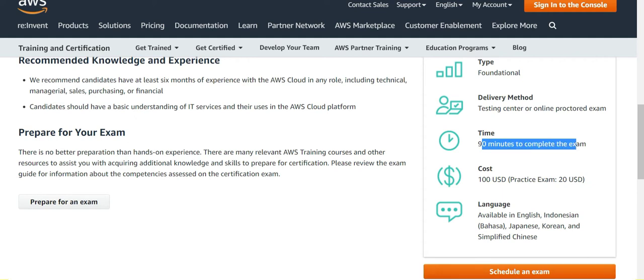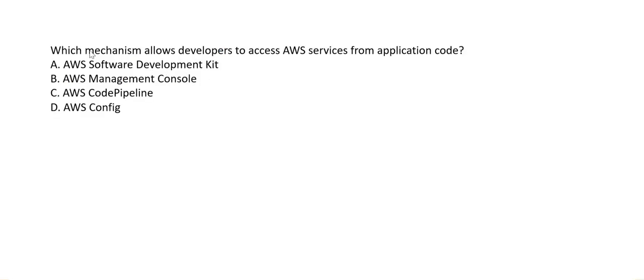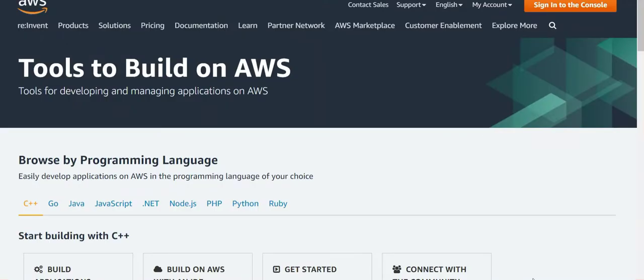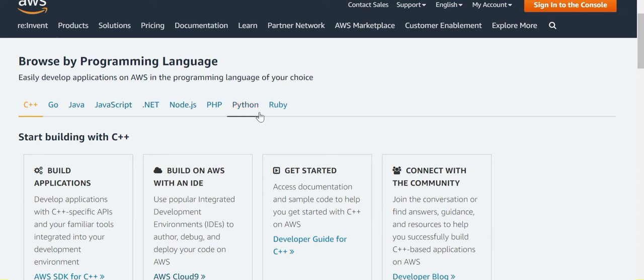The first question: which mechanism allows developers to access AWS services from application code? The answer is the Software Development Kit (SDK). Other options like Config is used to track configuration changes to AWS resources, and CodePipeline is used for continuous deployment using GitHub repositories. SDK is the right tool for this purpose.